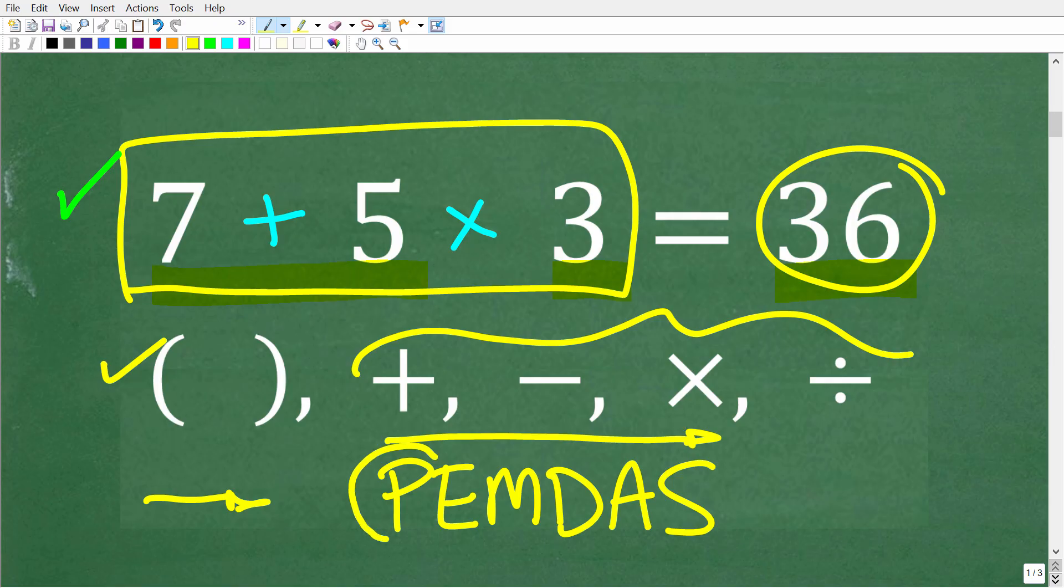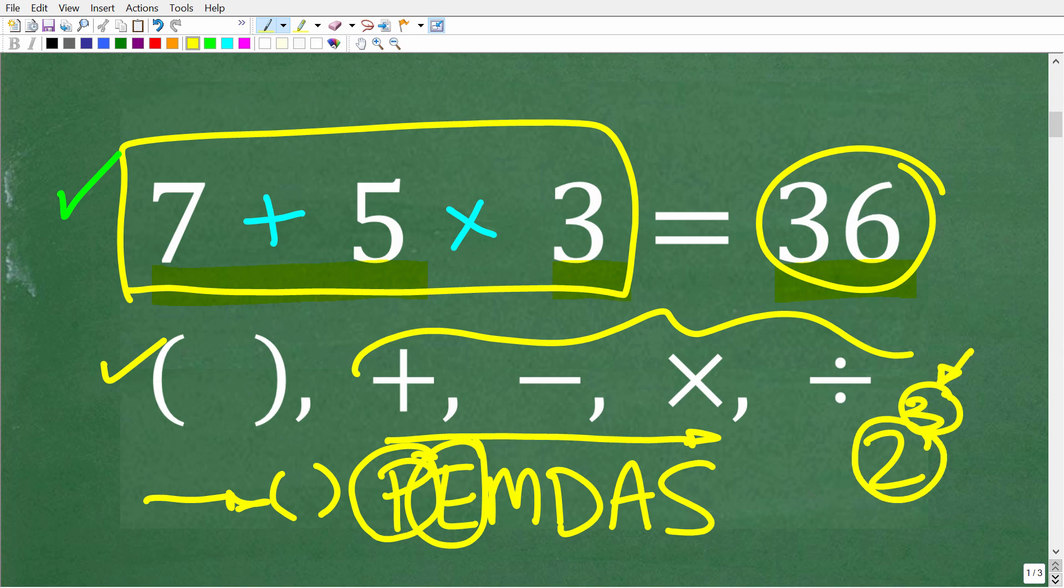Okay, so what does P stand for? Well, P stands for parentheses or grouping symbols. So if you have any parentheses in your math problem, you need to do those first. Now, E stands for exponents or powers. So if you had like 2 to the third power, this little 3 up there is an exponent. The 2 is the base. The entire thing is a power. But if you had any powers in your problem, you would do those next.